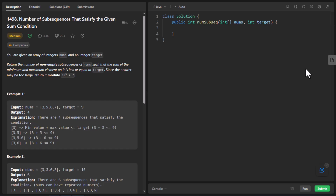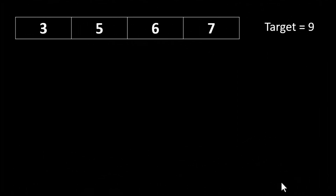Since the answer can be too large, we need to return the modulus of that. There are two sample examples given in the problem. We will take the first sample example and see how the result is computed — specifically, what are all the subsequences that can be created from the sample array, and whether they satisfy the condition that the minimum plus maximum in that subsequence is equal to or less than the target.